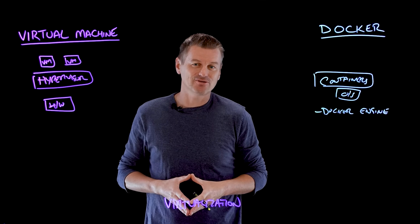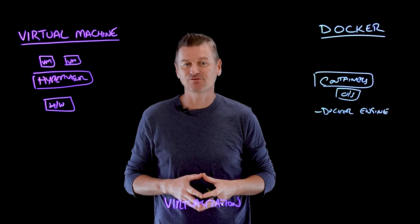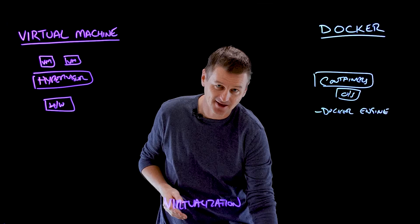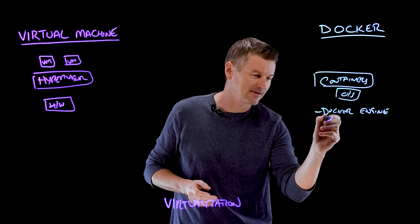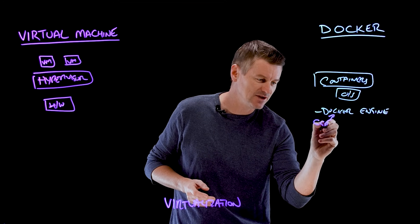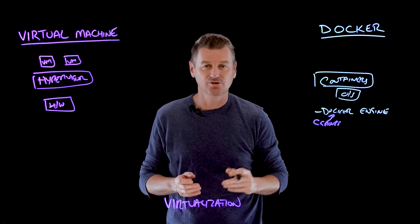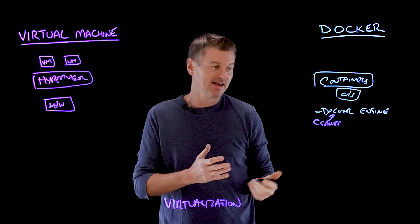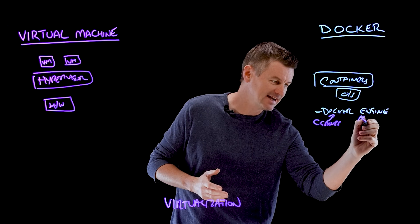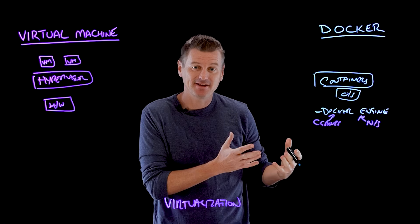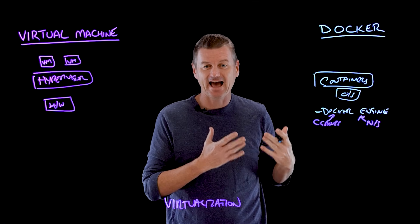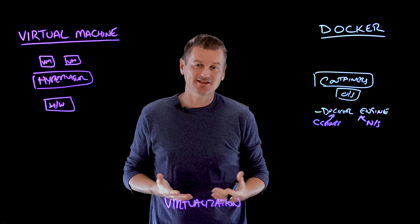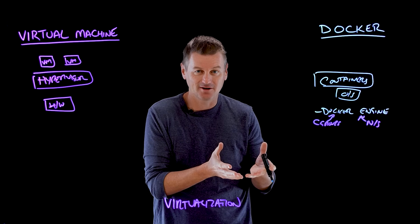The Docker Engine interacts with the host kernel to allocate resources and enforce isolation between containers, and that's done through two things primarily. There's something called cgroups, or control groups, which allocate resources among the processes. And then there's namespaces, which restrict a container's access and visibility to other resources on the system, ensuring that each container has its own isolated environment.